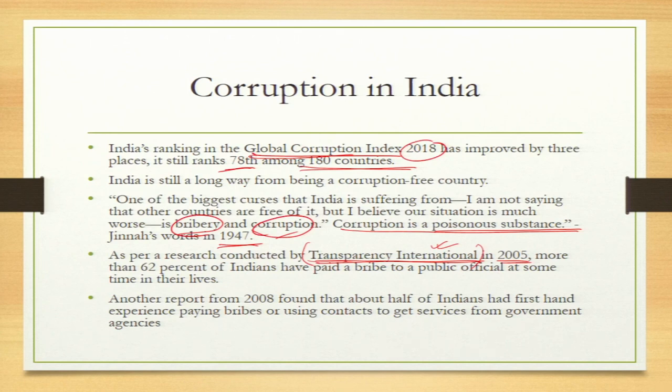Another report from 2008 found that about half of Indians had first-hand experience of paying bribes or using contacts to get services from government agencies. If you have to get the work done, either you should know someone there — if you have a connection, that makes your task easy — or even for paying bribe, you will get a concession. This kind of culture is so prevalent in India, and that is how corruption is so deep-seated in Indian society.